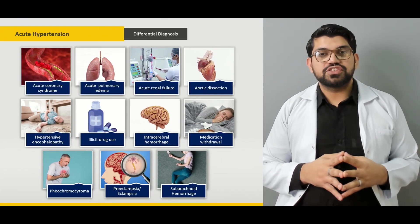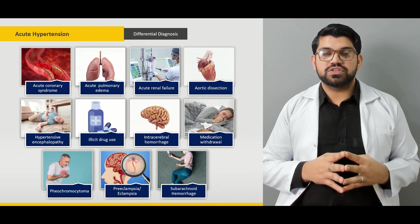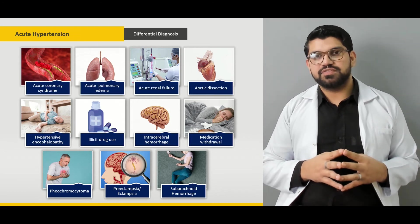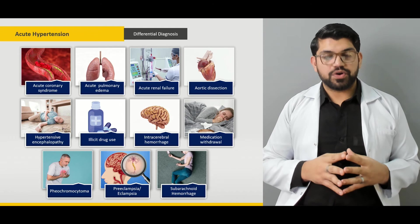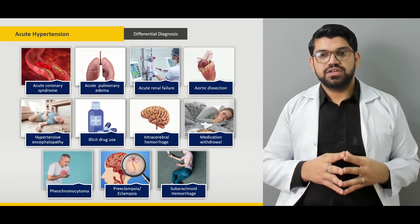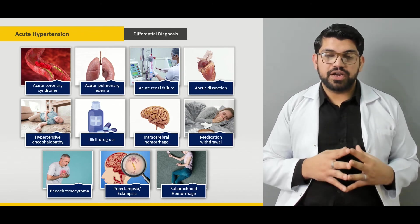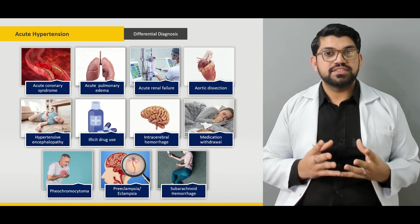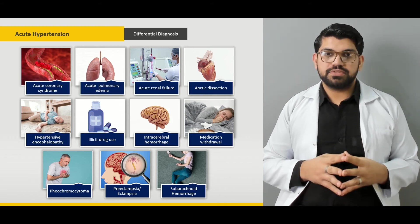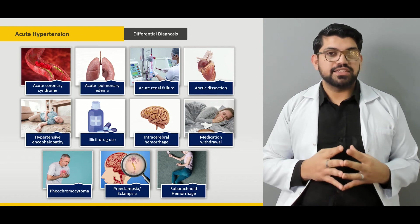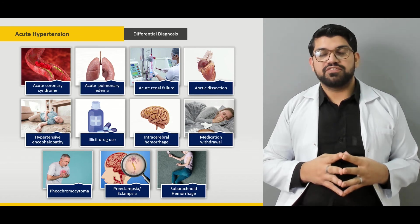Then will be differential diagnosis. What are the number of diseases that are linked with acute hypertensive emergencies or with hypertension, which includes some cardiac diseases, muscular diseases, CNS problems, visual disturbances, and especially females who are pregnant?